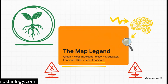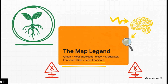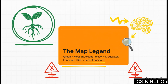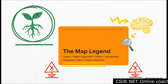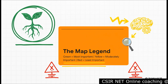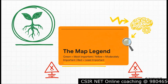To make this super simple, we're using a color-coded system — think of it like a traffic light. Green topics are your absolute highest priority; these are your non-negotiables. Yellow topics are moderately important; you need a really solid foundation here. And the red topics? You just need to know the basics. This legend is your key to studying smart.